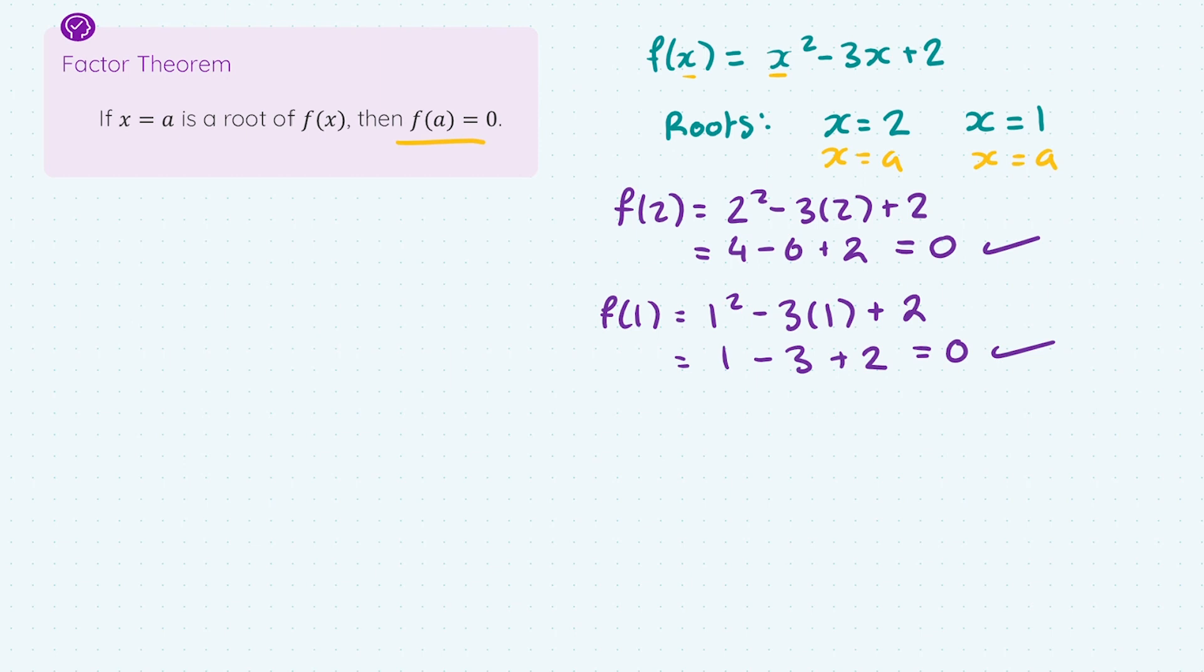Next thing we need to cover to work with the factor theorem is moving between factors and roots. Factors can be converted into roots and vice versa. If I take a factor x minus 1, how do I find the corresponding root? Well, I let the factor equal zero and solve for x. So I get x equals 1. So x equals 1 is the root corresponding to the factor x minus 1.